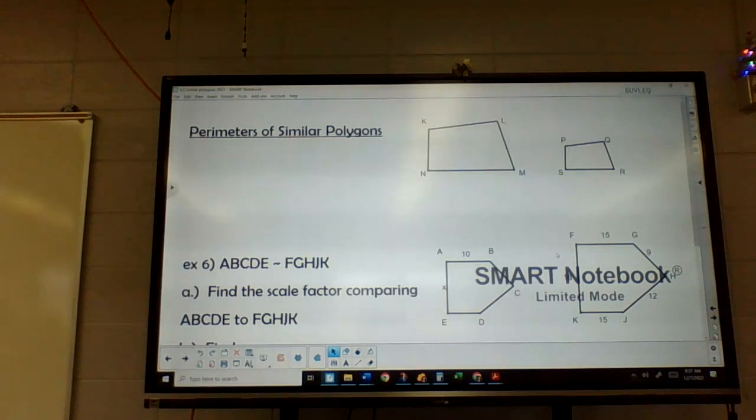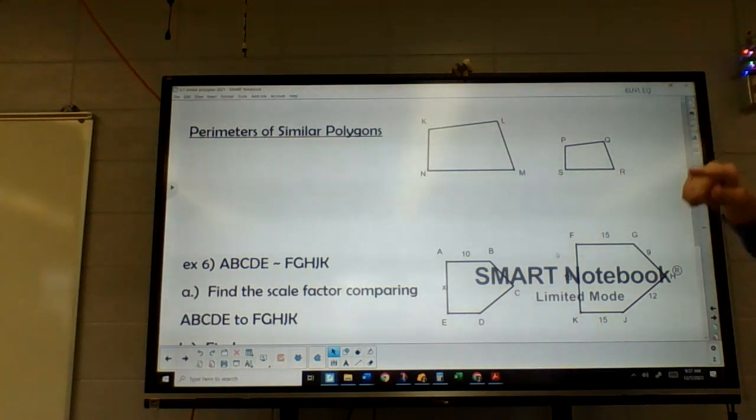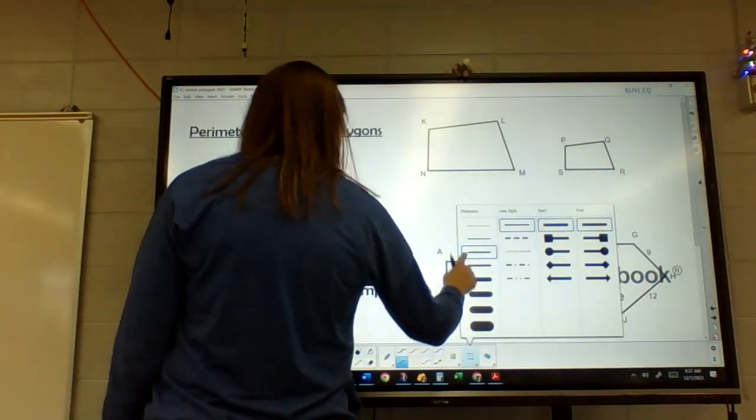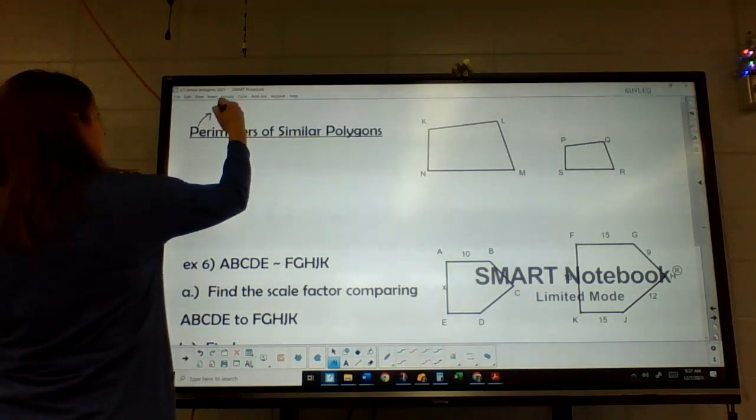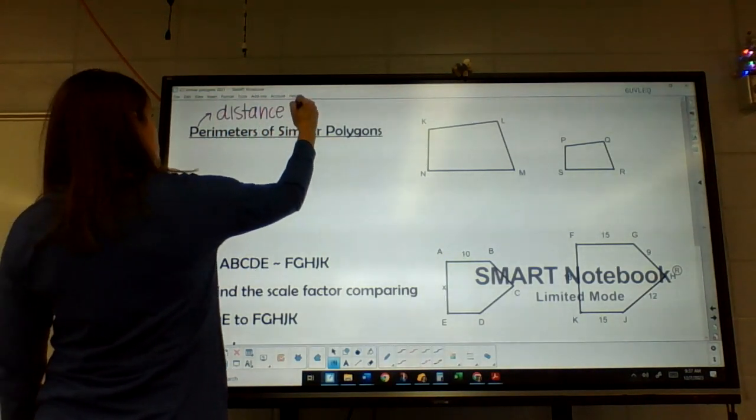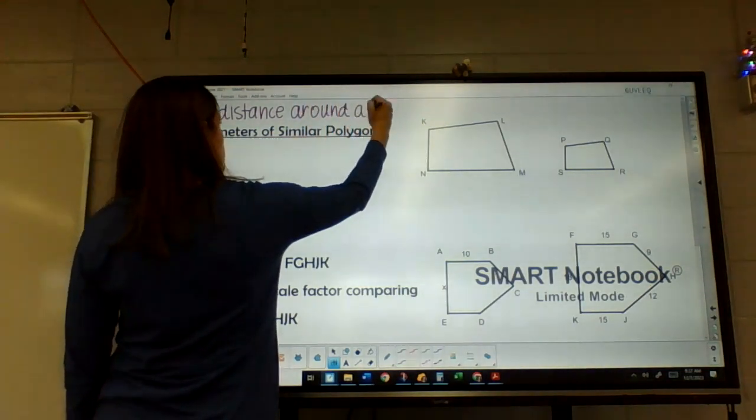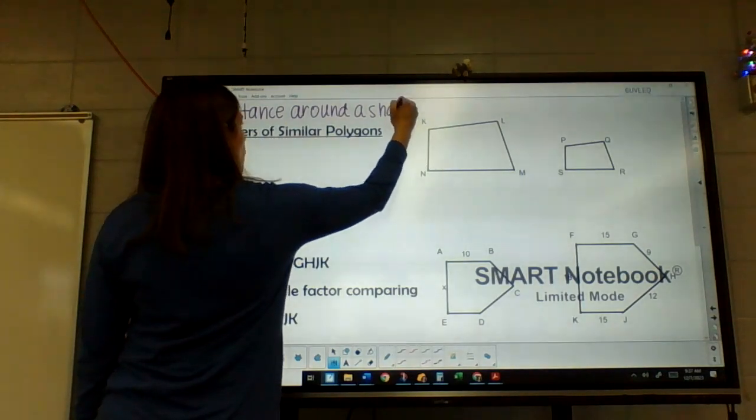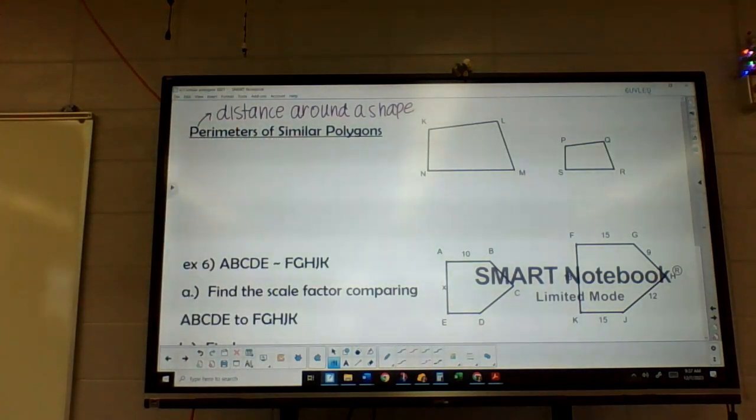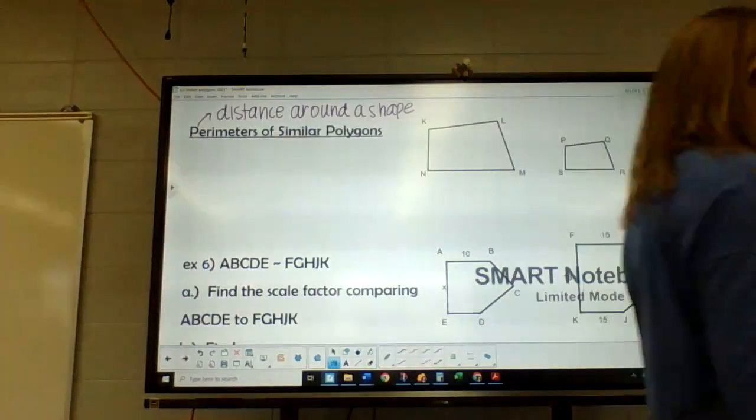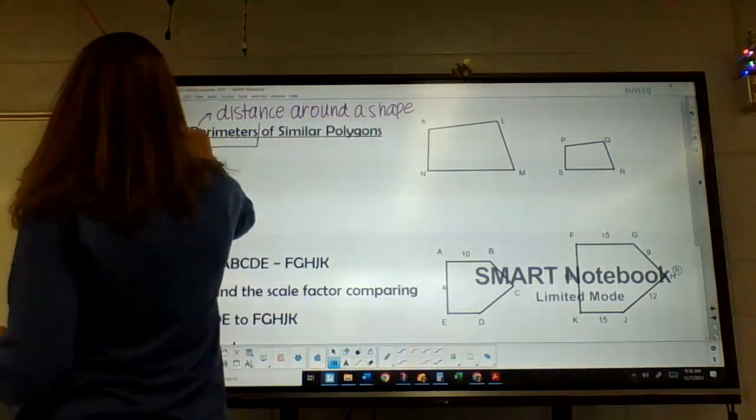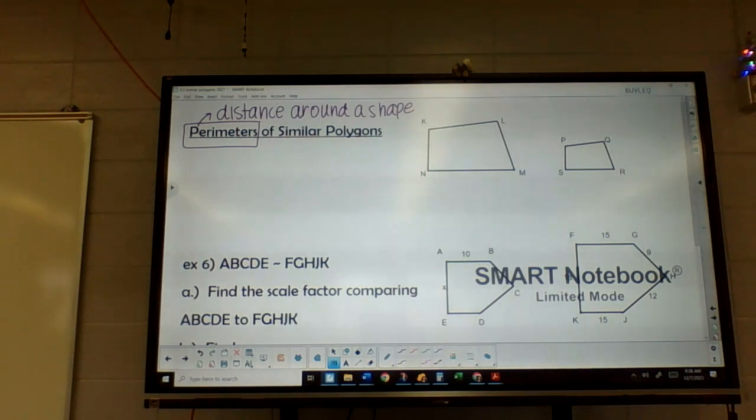For perimeters of our polygons, we talked about similar shapes. Their sides are proportional, but so are their perimeters. So that's the distance around. Just to remind you guys, perimeter is the distance around the shape.